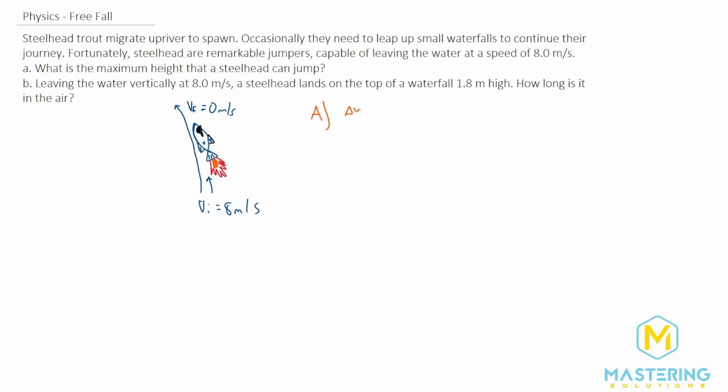We'll be looking for the delta Y. We need a kinematic equation that uses the final and initial velocities and allows us to look for delta Y. There is a kinematic equation we can use: V final squared equals V initial squared plus 2A delta Y.